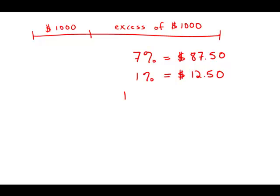And what that means is that 100% is $1,250. Now we have to keep in mind that's not the price. That 100% is the excess above $1,000, because that was the portion being taxed.